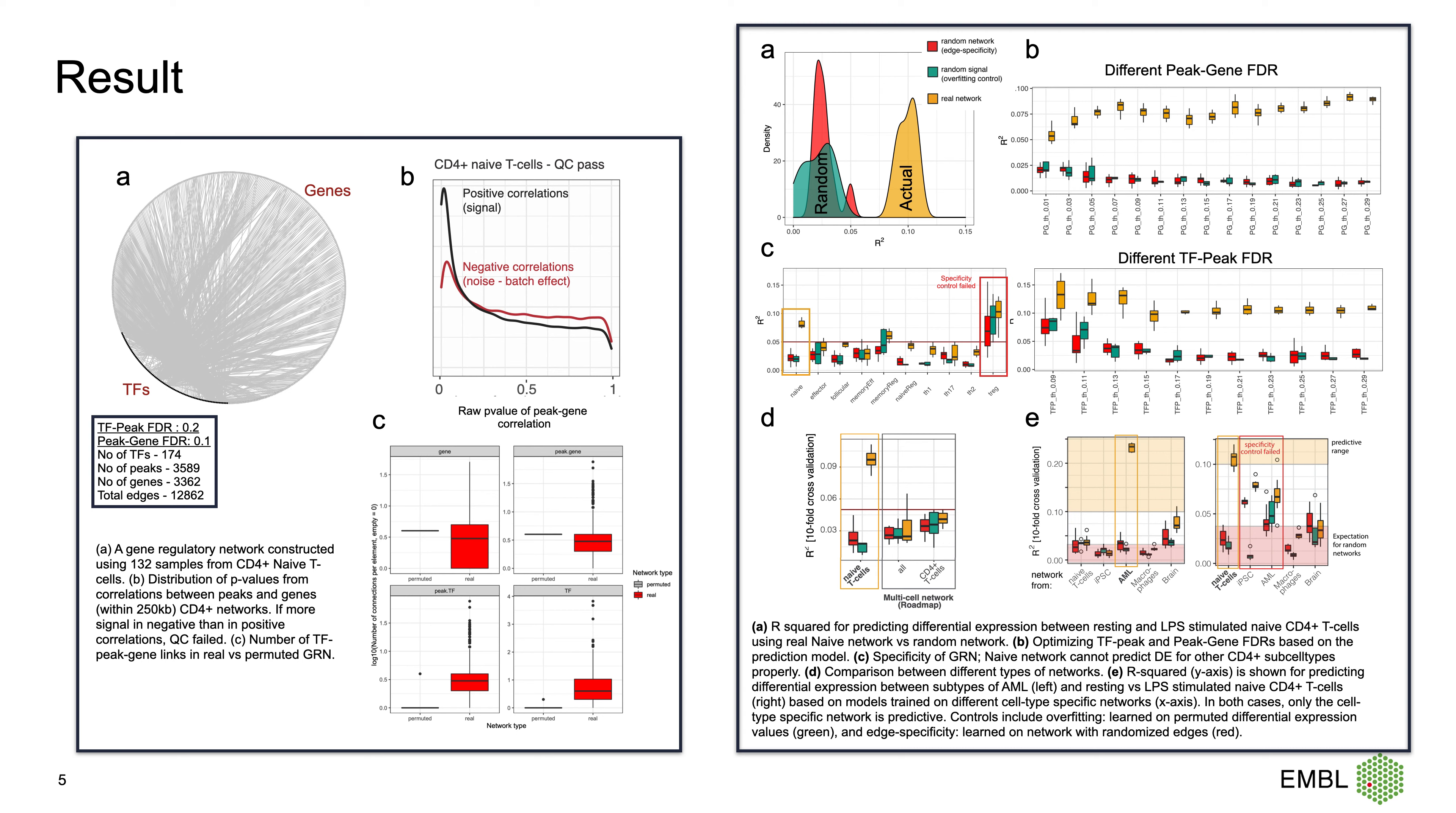In part B, it's a QC plot and it shows the peak-genes are positively correlated more than negatively correlated. If there's more signal in the negative than the positive correlation, then QC would fail. And finally, in part C, we have more links in real network versus permuted, as expected.